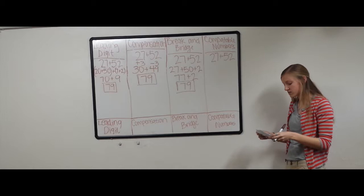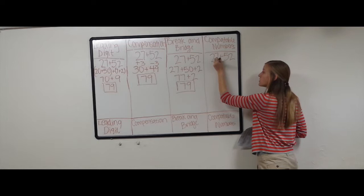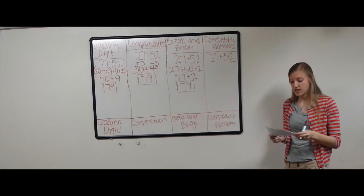Now on to our last way of adding, compatible numbers. For compatible numbers, we're going to make the 1 place value. So this is our 1's place value, the 7 and the 2, into the same number, so it's easier to add.